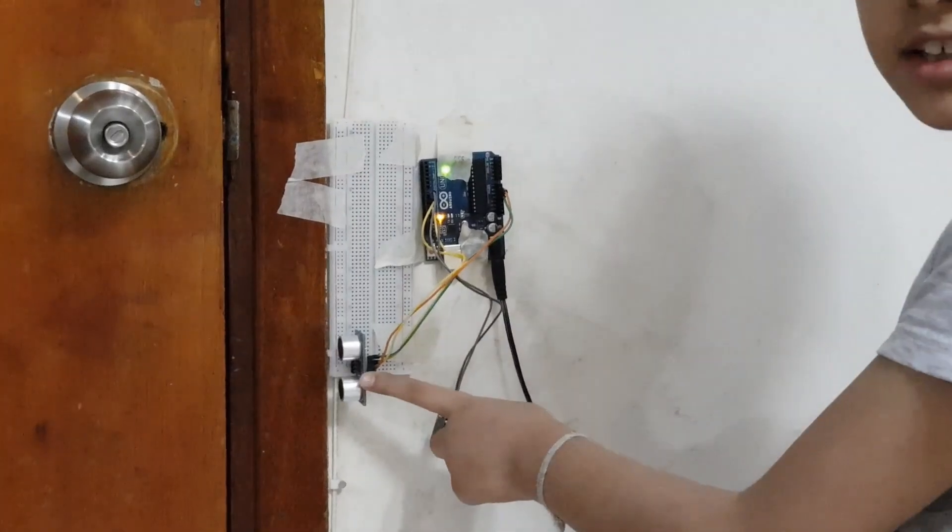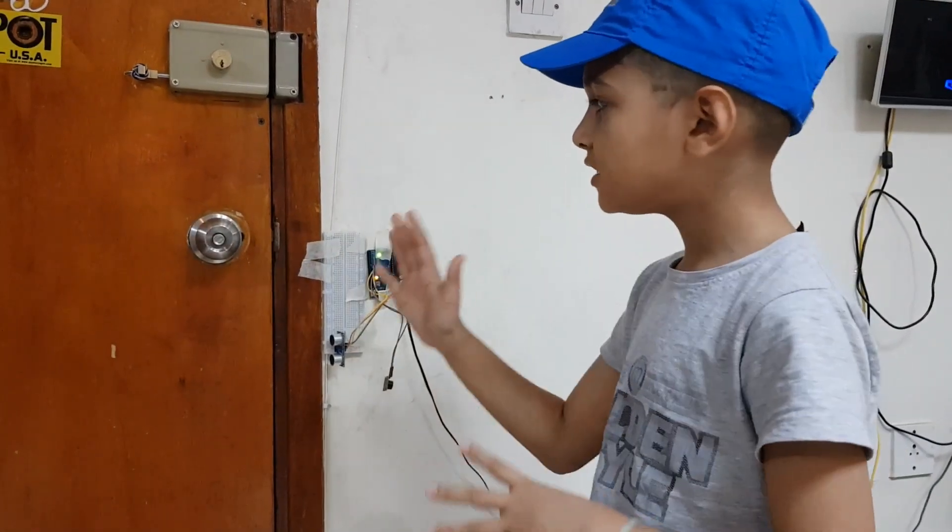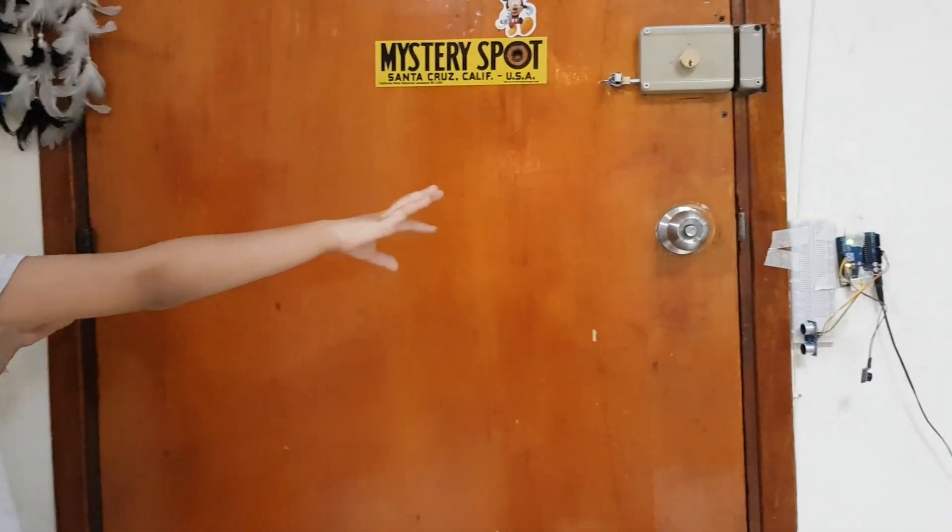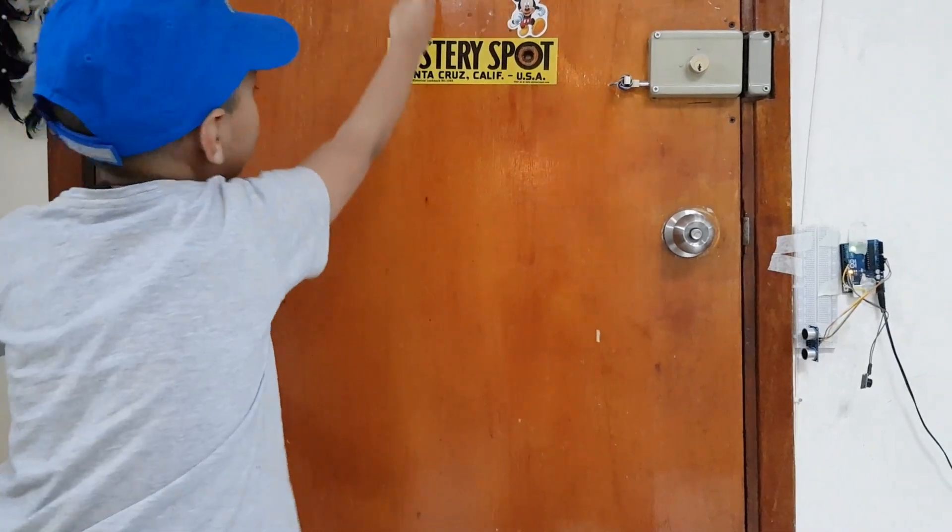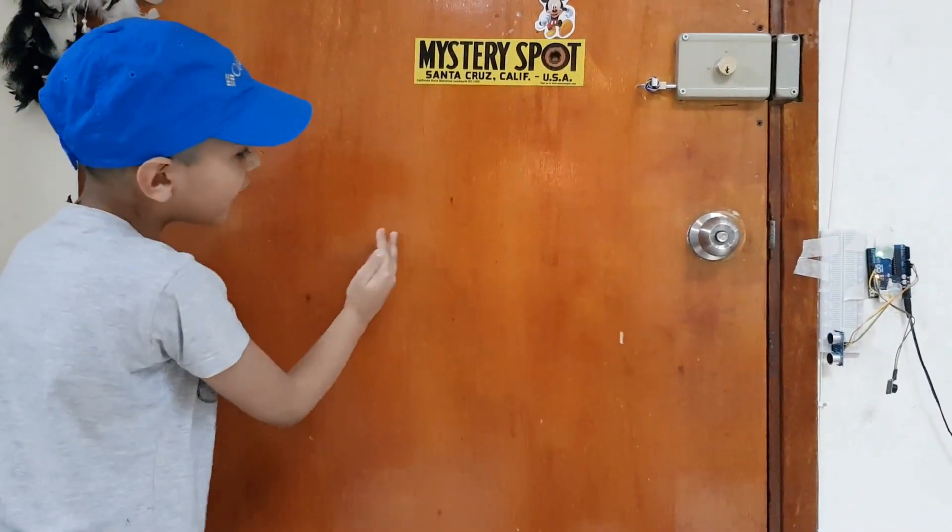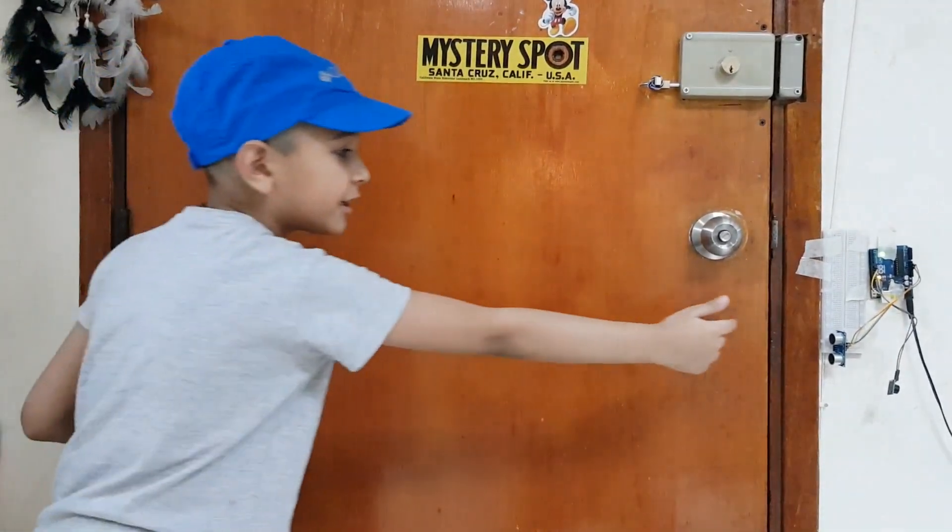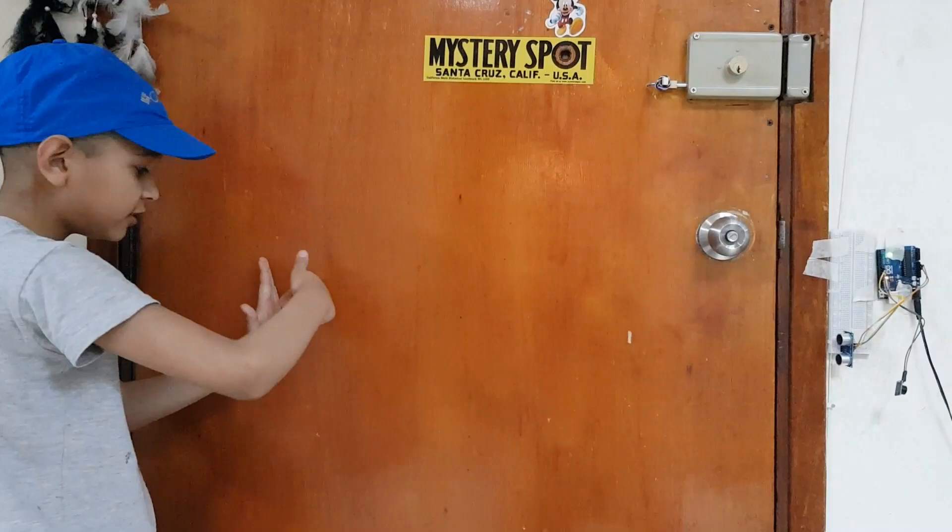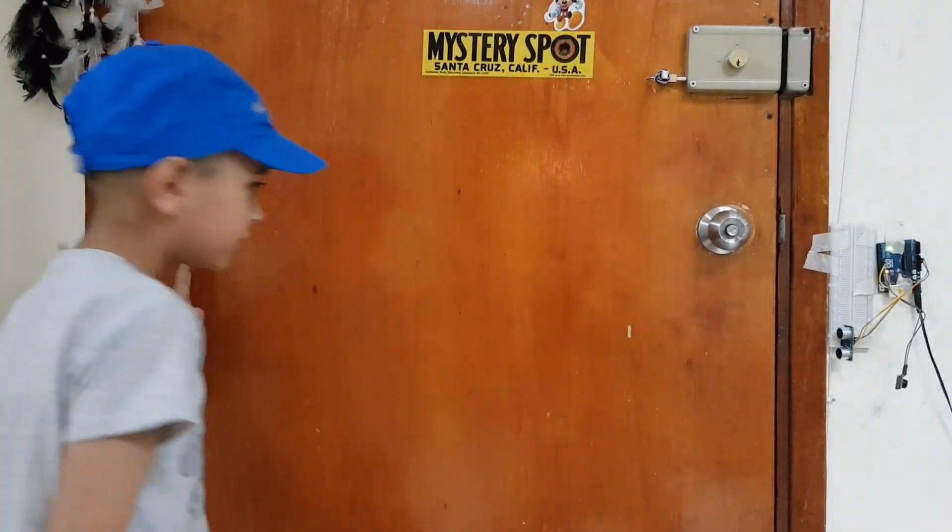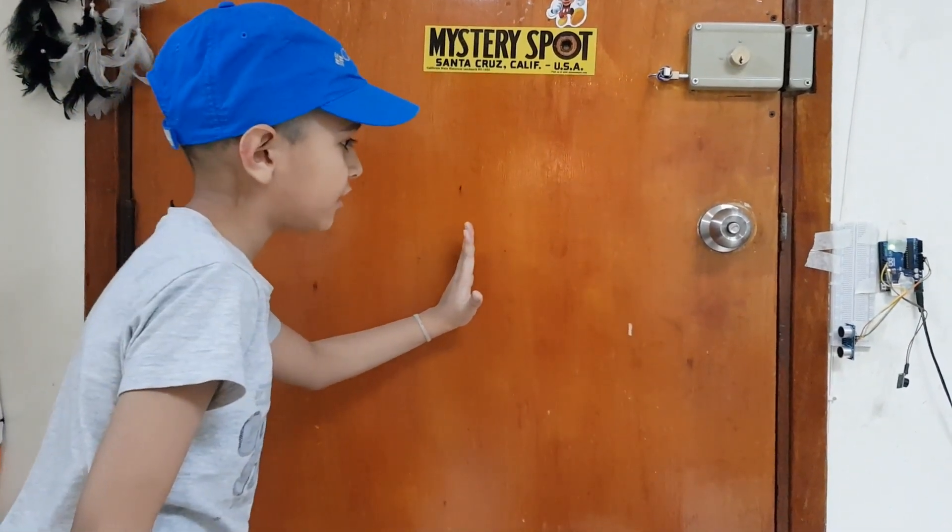And this ultrasonic sensor is programmed to detect objects inside half a meter. So this full door is 1 meter, so the half would be right here. So if anything comes inside half a meter, that ultrasonic sensor will give out waves. It will hit the object, come back, and that will switch on the buzzer. So if I do this, it should start buzzing now.